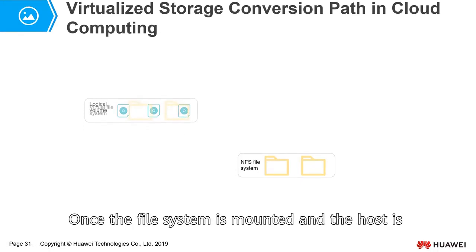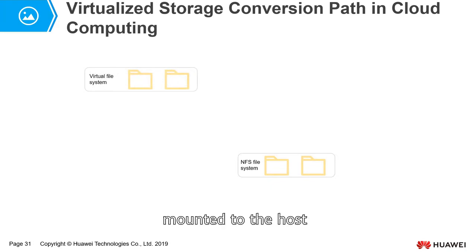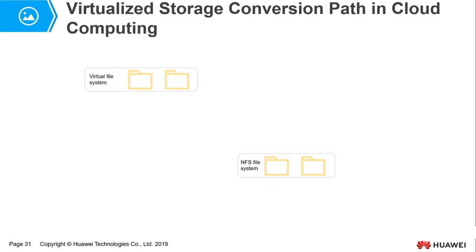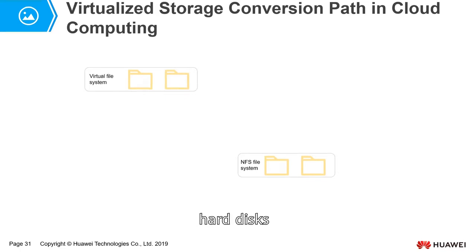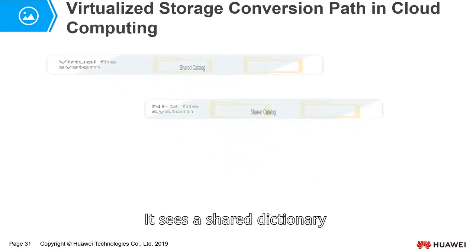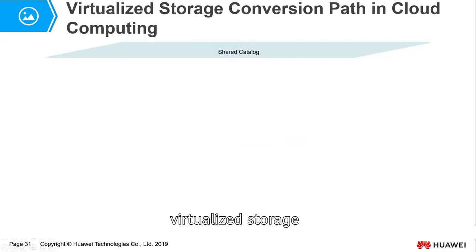Once the file system is mounted, the host is mounted to it. The storage that the host sees is no longer a physical hard disk — it sees a shared directory, which completes the conversion path of the entire virtualized storage.